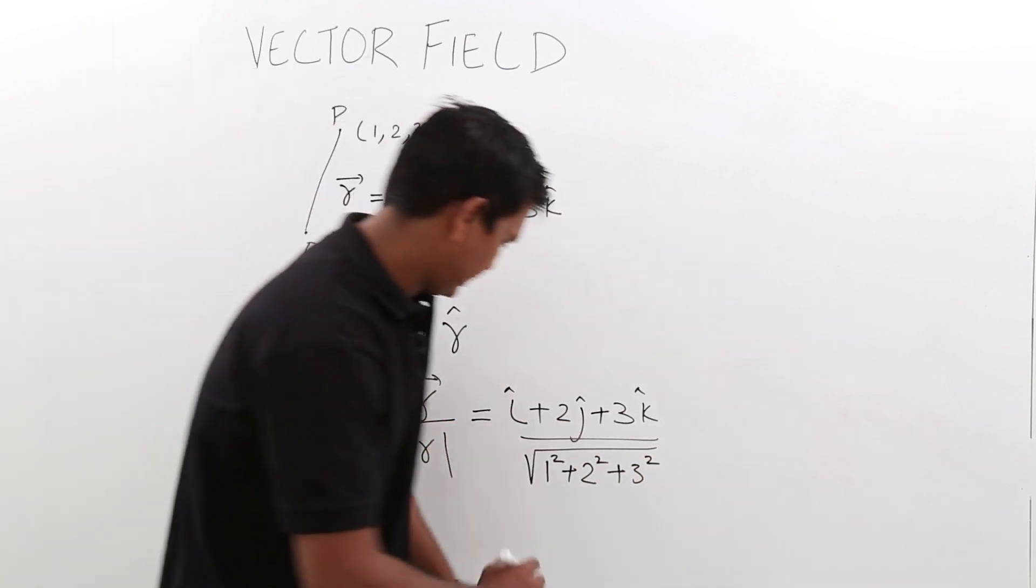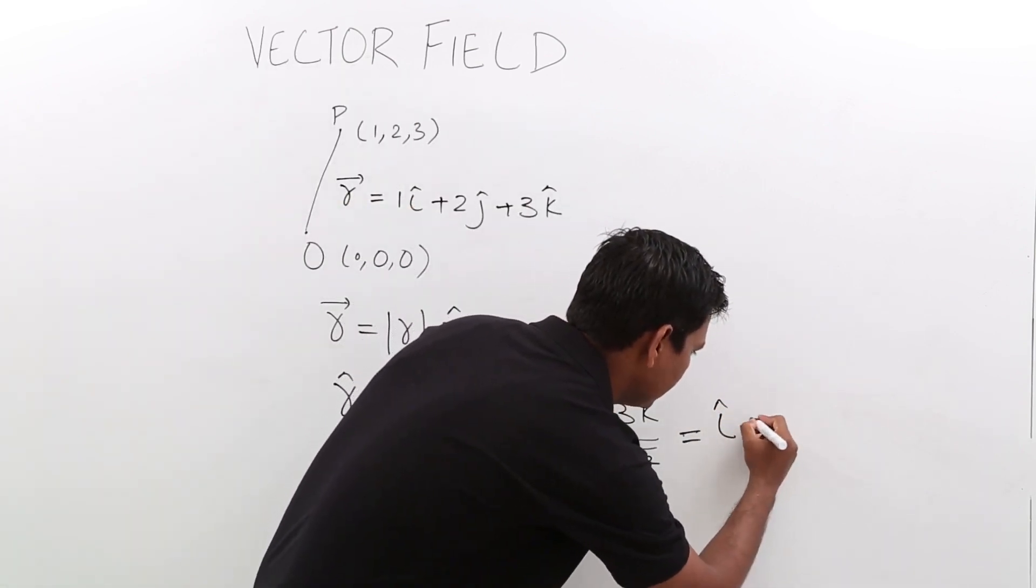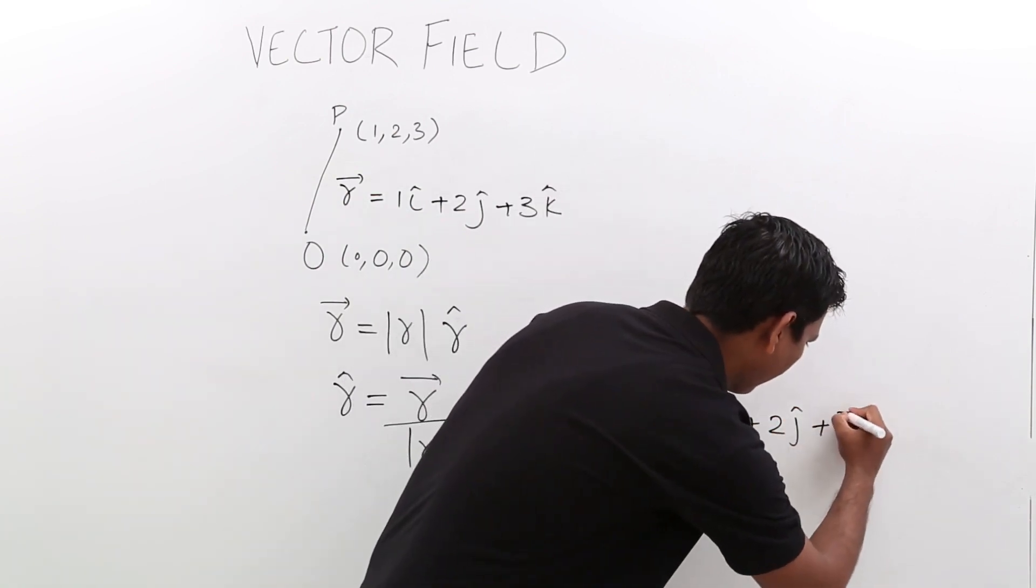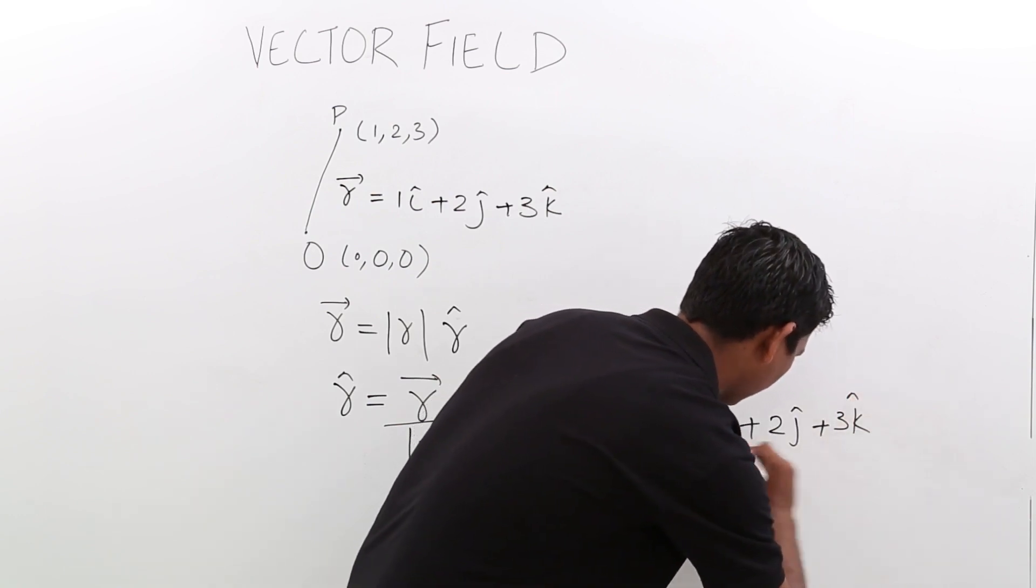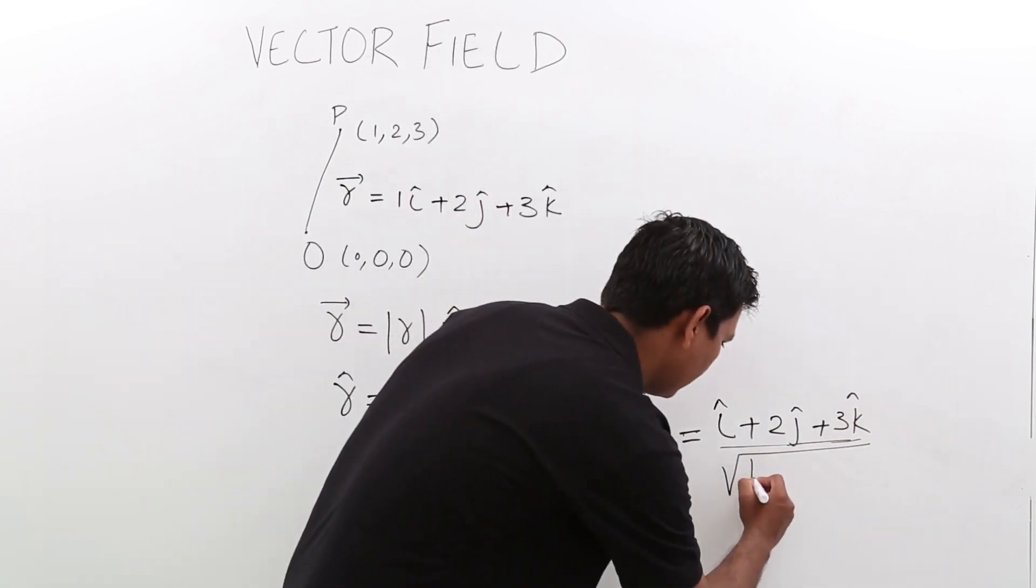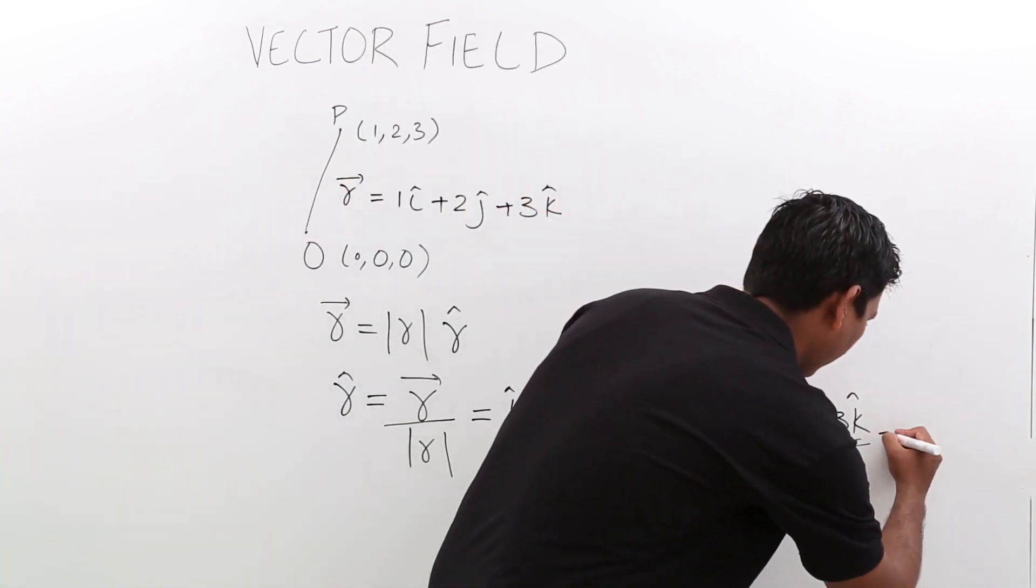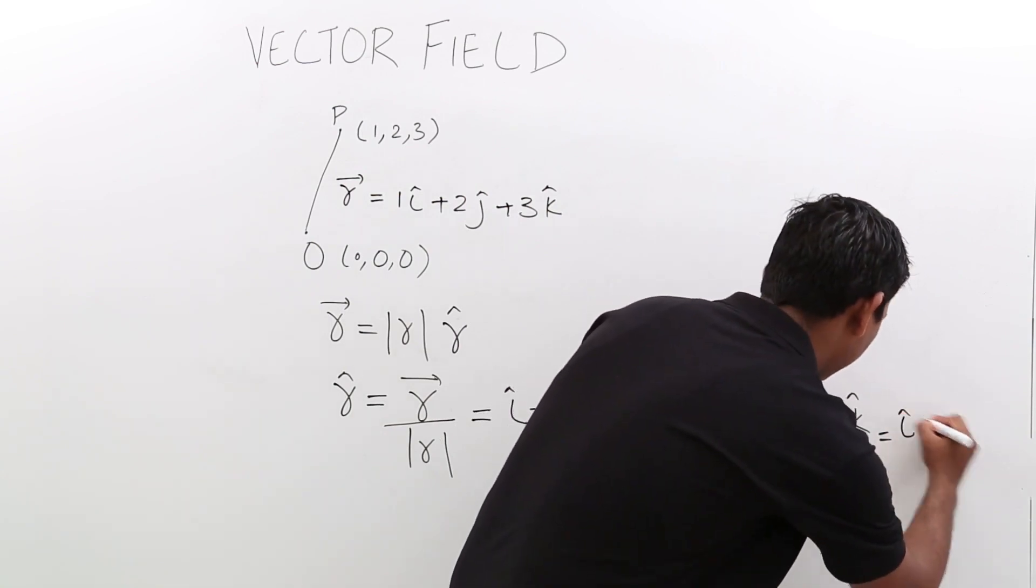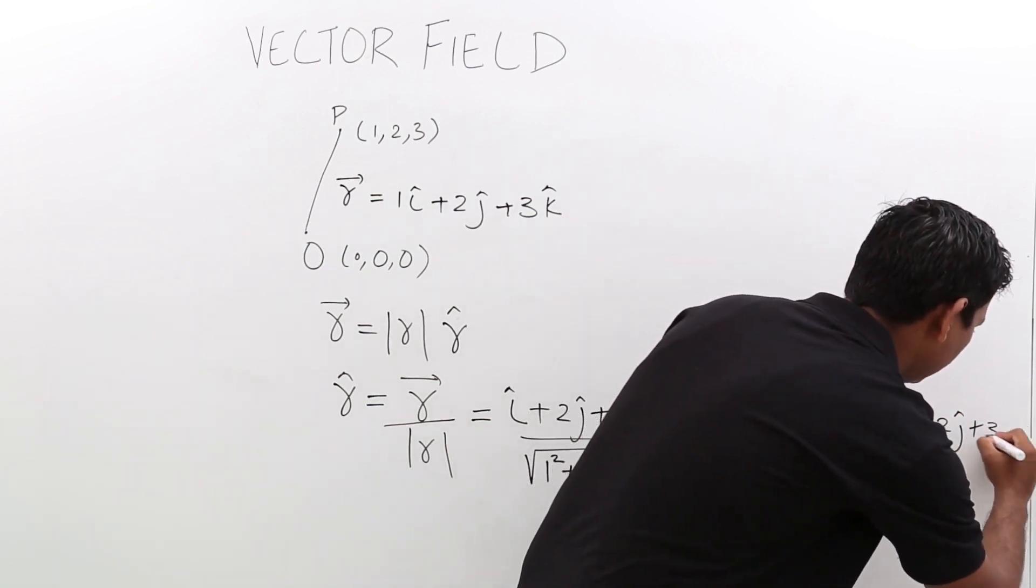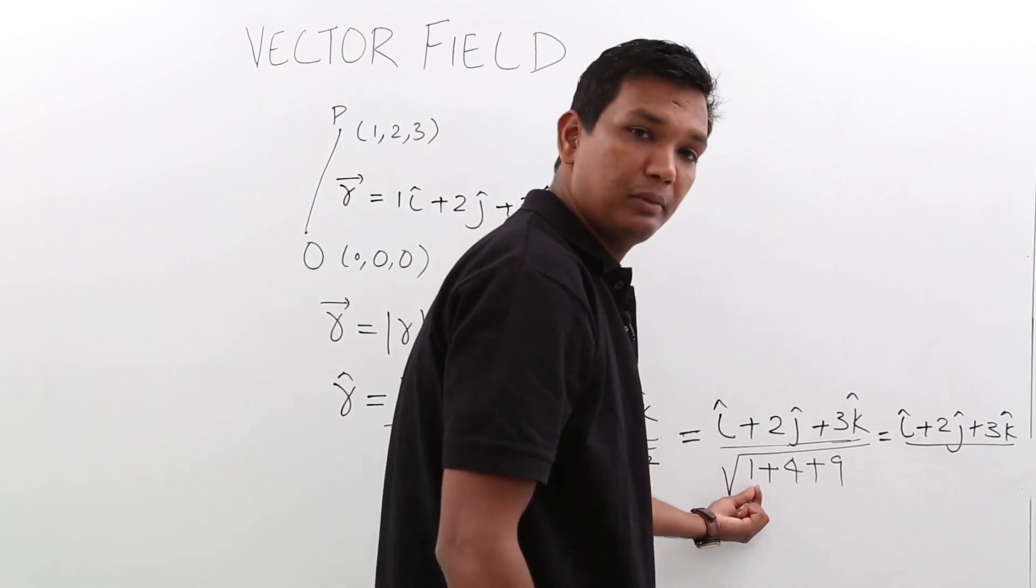If I calculate further, I get i cap plus 2 j cap plus 3 k cap divided by the square root of 1 plus 4 plus 9. This is i cap plus 2 j cap plus 3 k cap divided by the square root of 14.